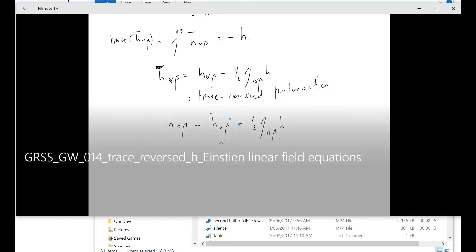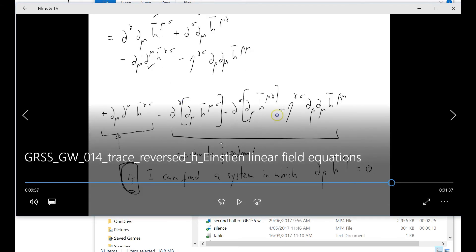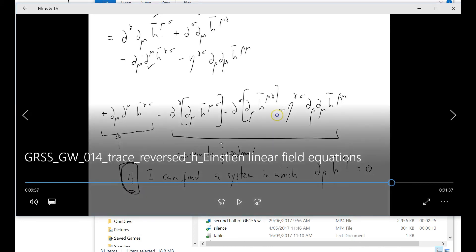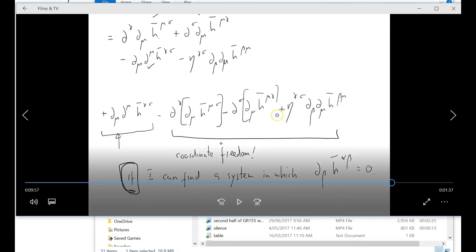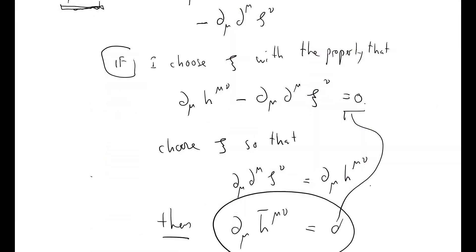Going back to screencast number 14, we can get rid of those extra terms from our expression and be left with a nice single-term equation, which I'm going to set equal to zero because I'm going to work in the vacuum solution. That's why gauge transformations work: they work because we can insist that this condition here is met, which makes our life easy.